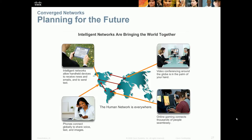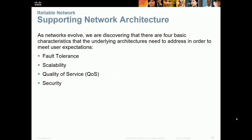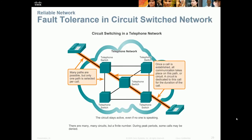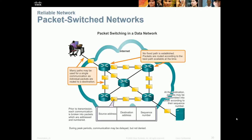What supports our network? The four major characteristics are fault tolerance, scalability, quality of service, and security. Fault tolerance means that if a component of our network fails, can we still get information to the other side? Within our packet-switched networks, yes — if any one device fails, we can still allow communication between other devices.